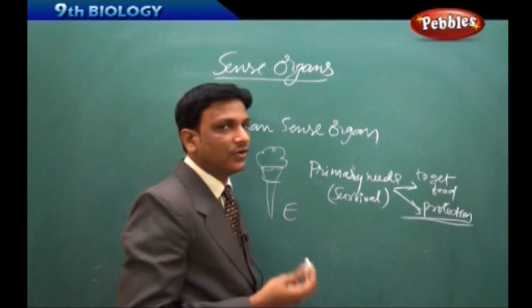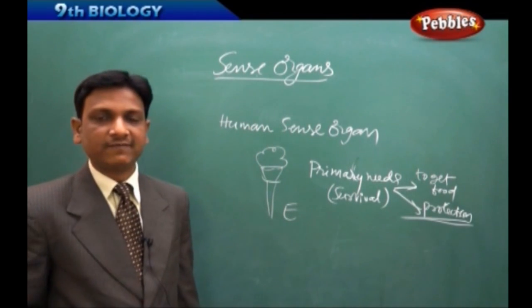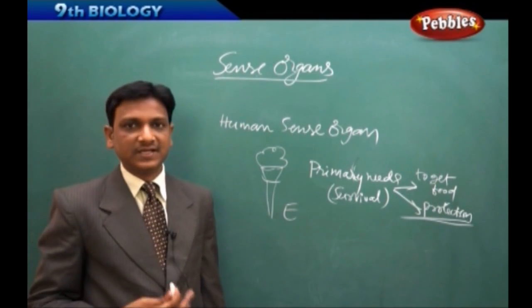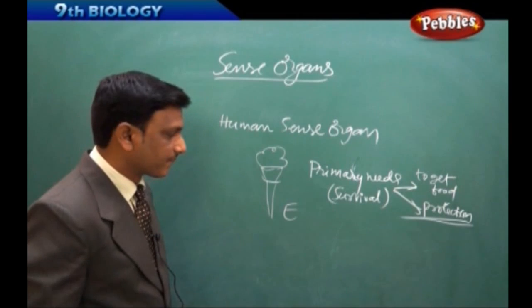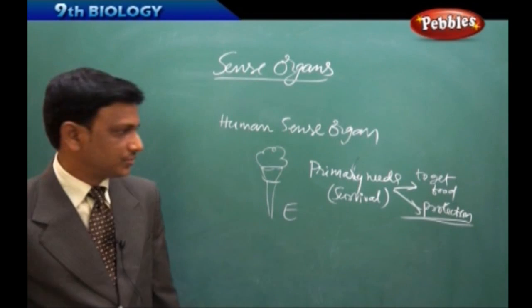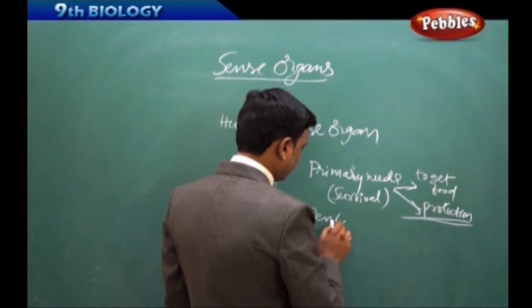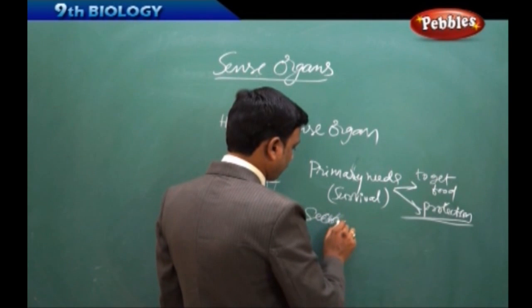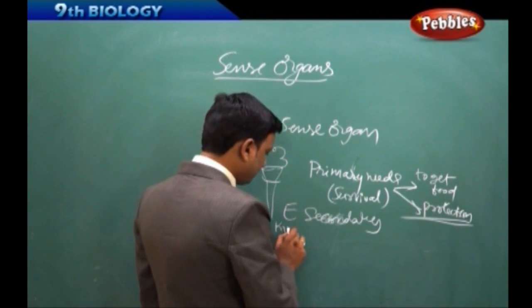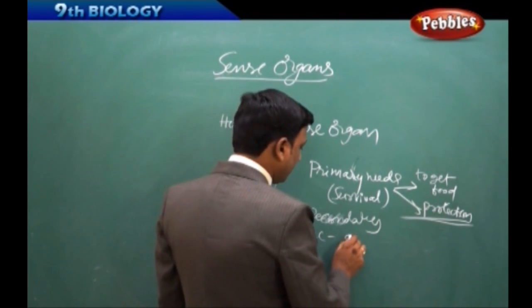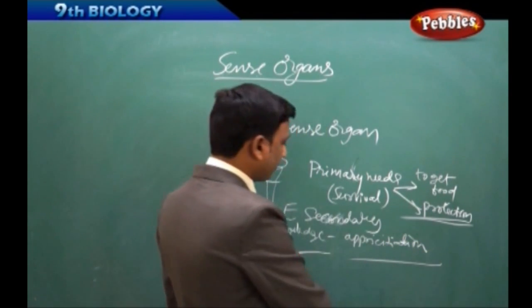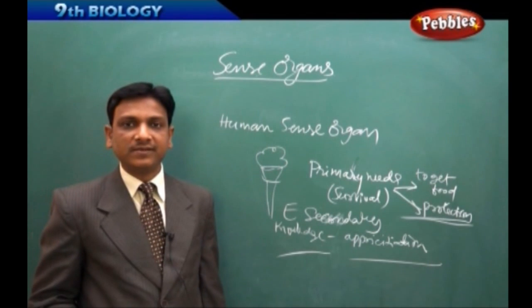We need sense organs to know about the world, to get the knowledge. We wanted to see different videos and understand, we wanted to see different animations, we wanted to see different lessons, listen to the lessons taught by the teacher. So listening, watching, smelling. So these are all appreciations. So the secondary, in case of secondary, what are the different purposes? For knowledge and for appreciation.